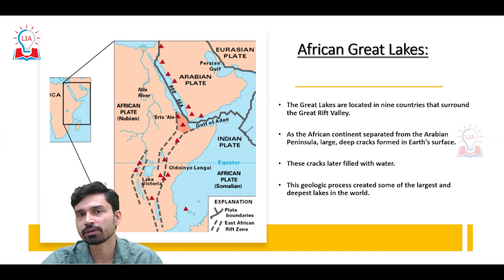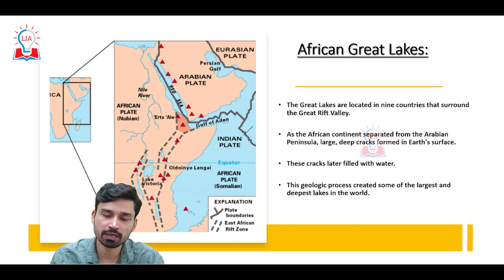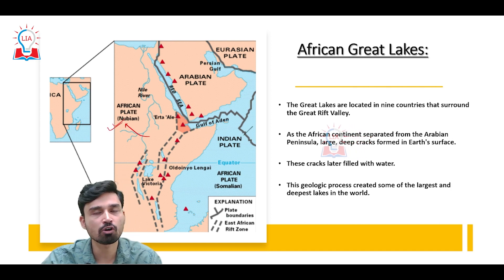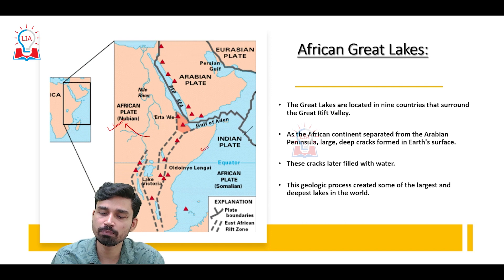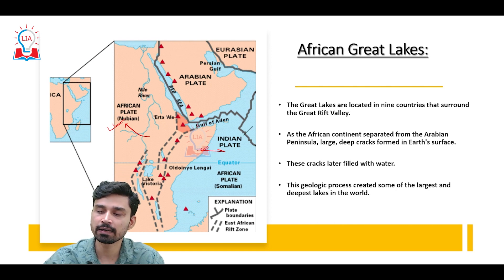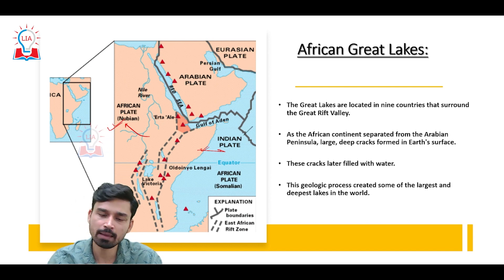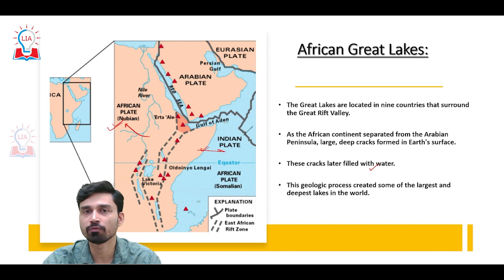The African Great Lakes developed due to geological processes centered on the Great Rift Valley. Along this region, the African plate is divided into the western Nubian plate and the eastern Somali plate. These two plates are moving away from each other — a process called continental divergence in plate tectonics — which has created a rift in the African continental crust. As the crust separates from the Arabian plate, depressions have formed and filled with water, creating what we know today as the Great Lakes of the African Rift Valley.